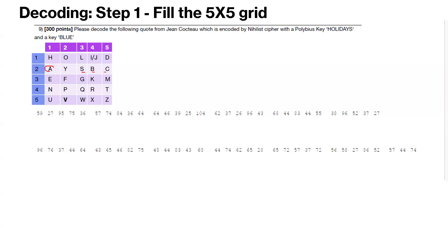So A is already covered here. So we start with B, C, D is also part of holidays. So D is here. So we skip D, E, F, G, H, and so forth. So we fill in all the values in this 5x5 grid, and that is the first step.